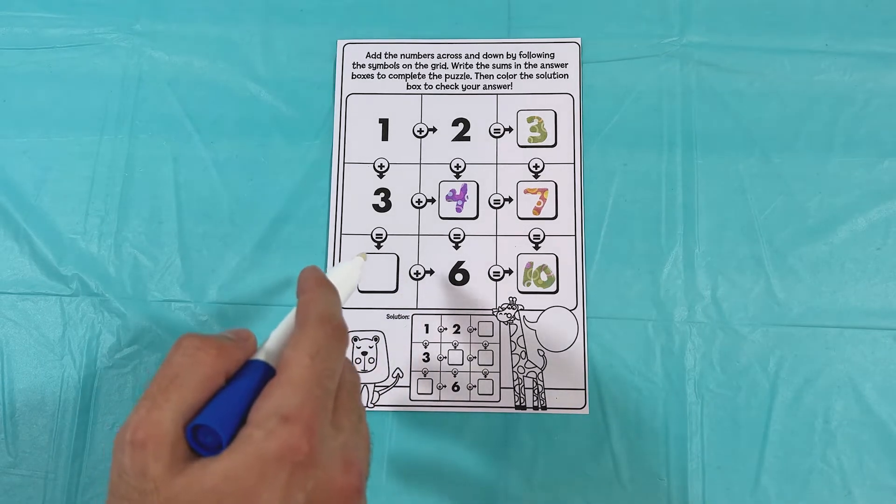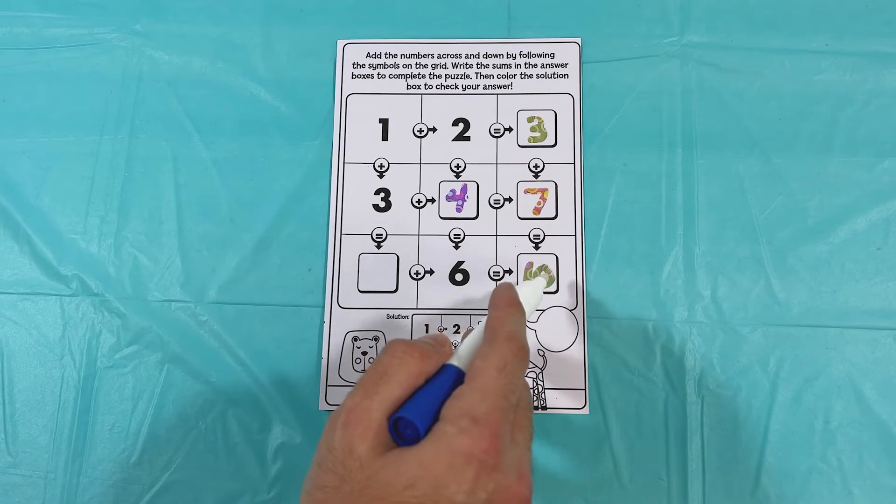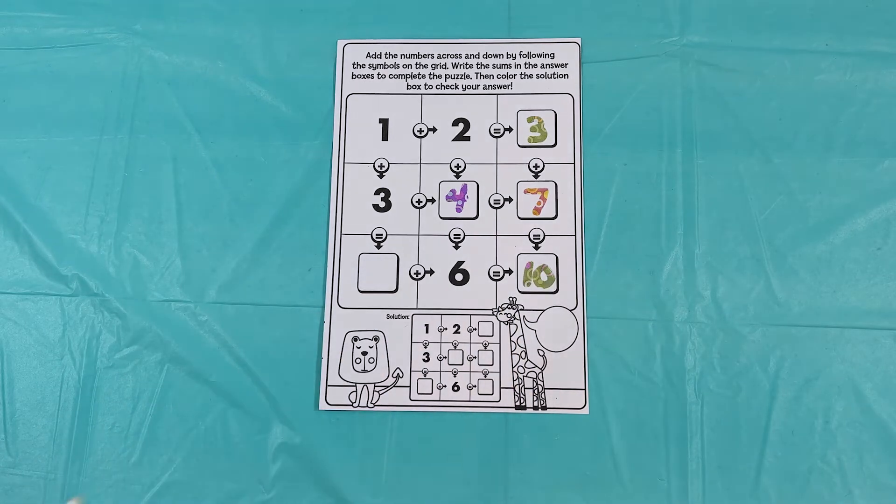Three and two, five. All right, last but not least we have blank plus six equals ten. So what plus six equals ten? That's right, four.